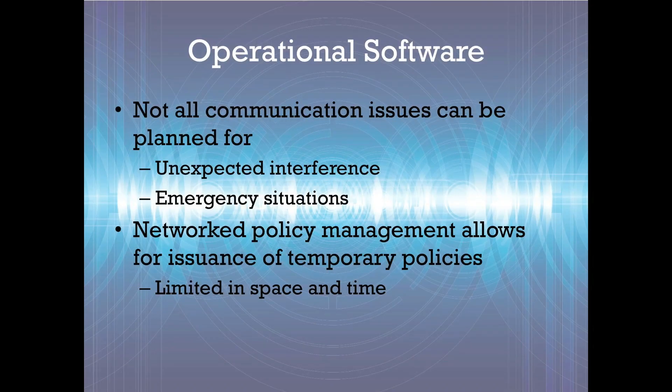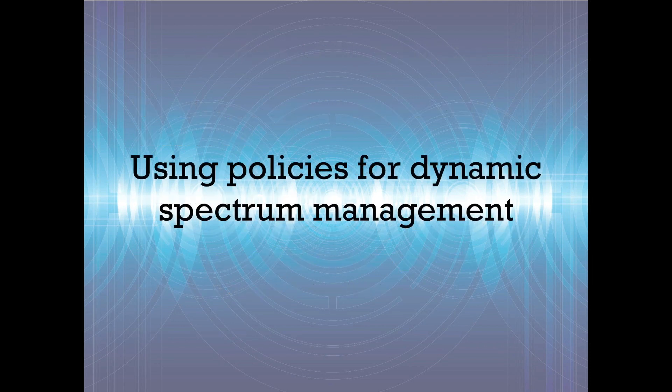Cognitive radios can automatically navigate around unexpected interference in complex radio environments. They allow spectrum policies to be defined for critical situations such as emergencies. When spectrum gaps are found, policies can define fine-grained spectrum leasing arrangements for just the desired segment of the flight. These are examples of so-called dynamic spectrum management, which we now demonstrate.